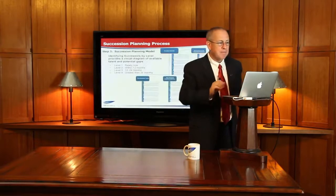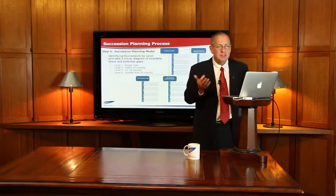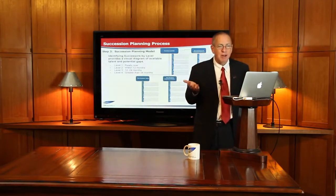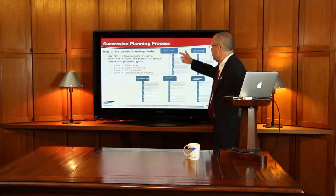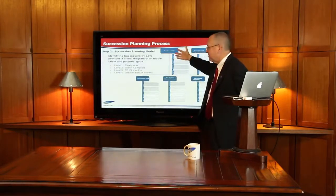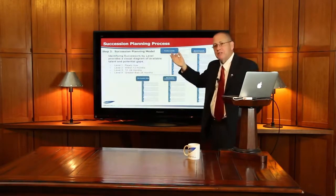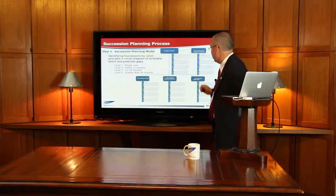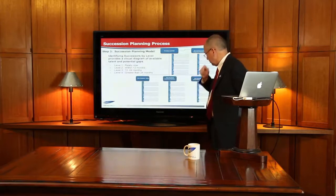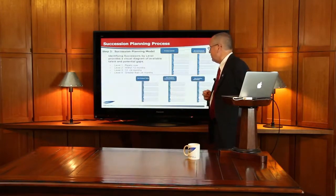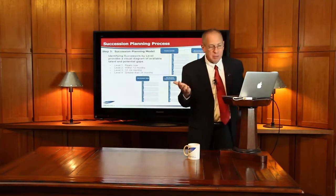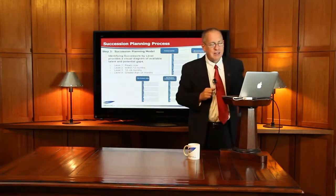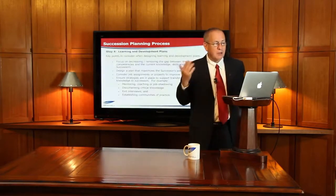Continuing with step three, we can have a model that identifies successors by level. We've identified level one — ready now — and level two — ready in 12 months. So we know the replacement potential for the president and CEO. For some positions, organizations find benefits in going externally, but not necessarily for internal positions. For those that are not ready — and frankly, most people will not be immediately ready for the next job they've been identified for — we need to get into learning and development.